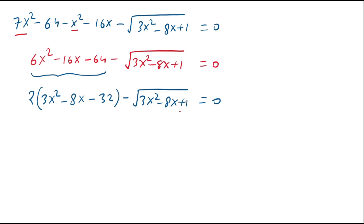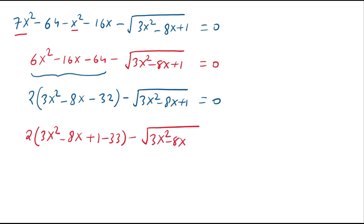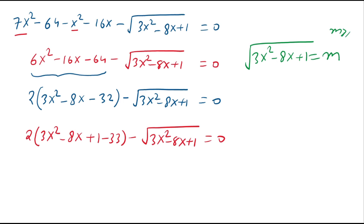We rewrite the expression: 2 times (3x squared minus 8x plus 1 minus 33) minus square root of 3x squared minus 8x plus 1, equals 0. Now we apply substitution: let square root of 3x squared minus 8x plus 1 equal m. Then m is greater than or equal to 0. Squaring both sides: 3x squared minus 8x plus 1 equals m squared.